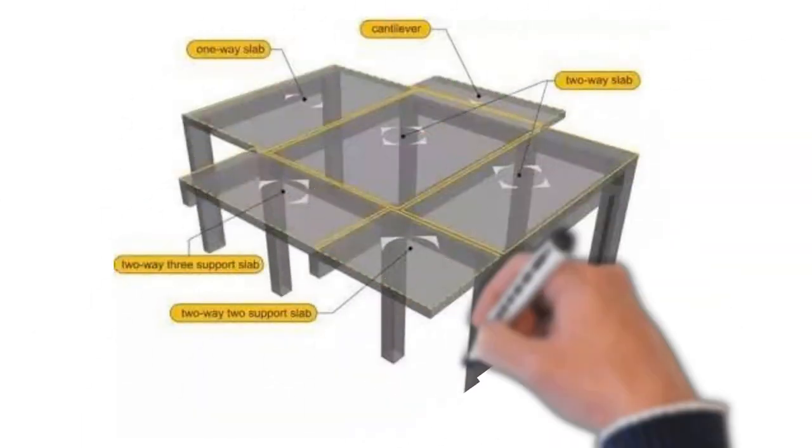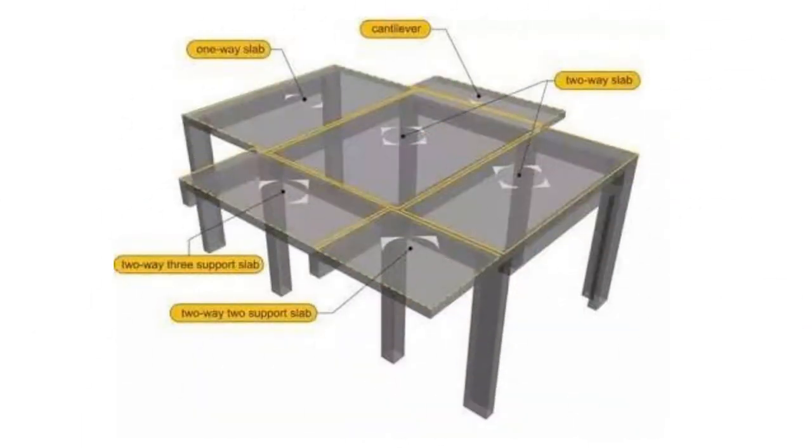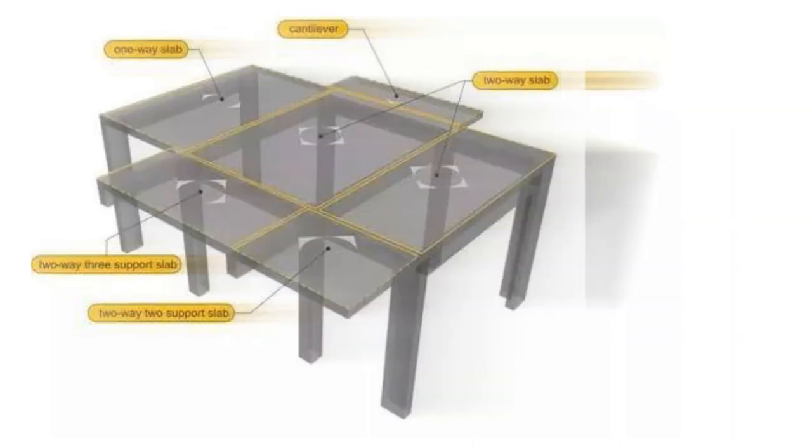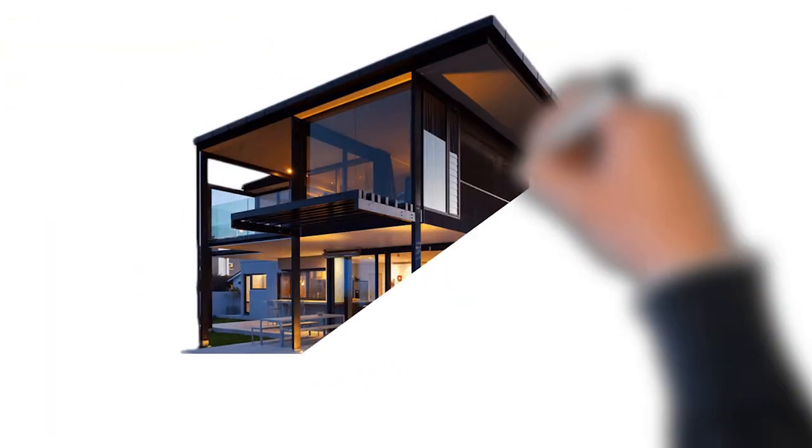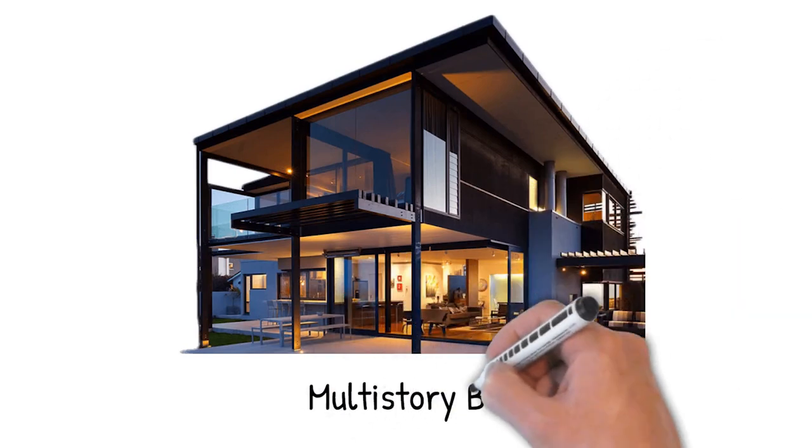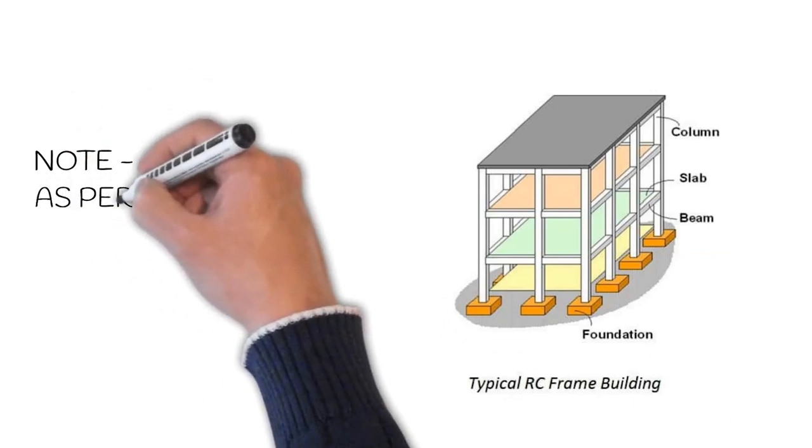Examples of one-way slab: Generally all cantilever slabs are one-way slabs, like chajjas and verandas. The best example of two-way slab is floor construction of a multi-storey building.